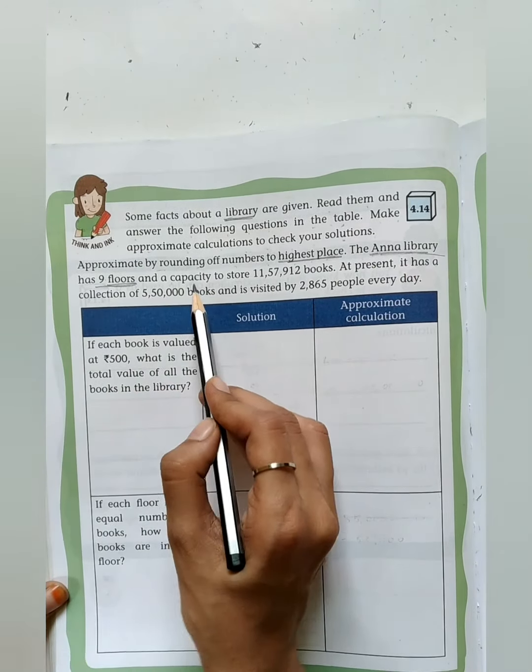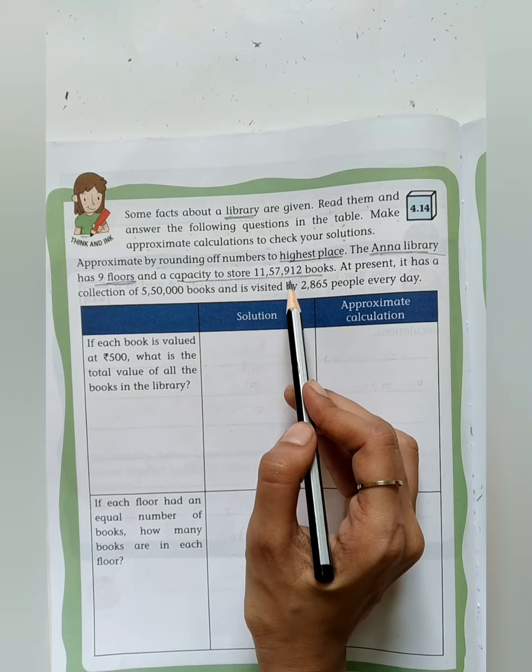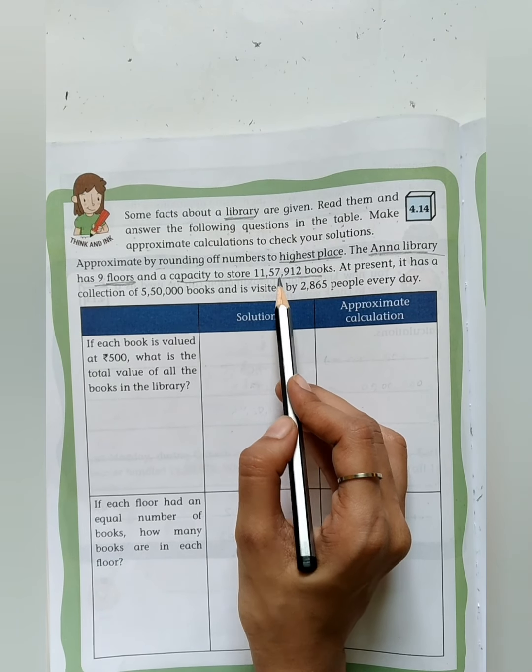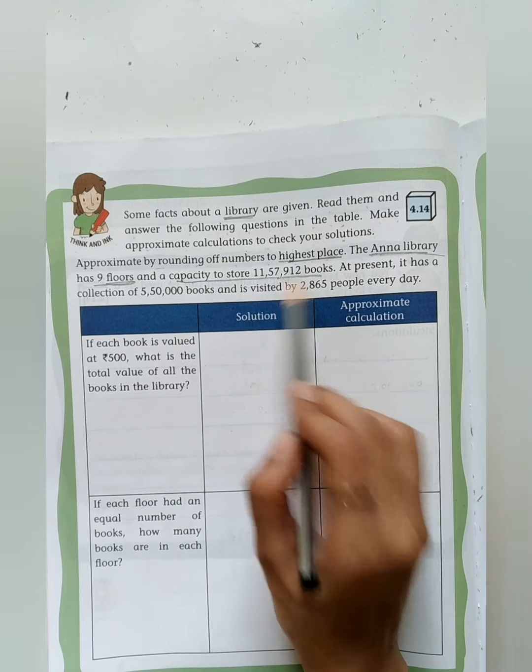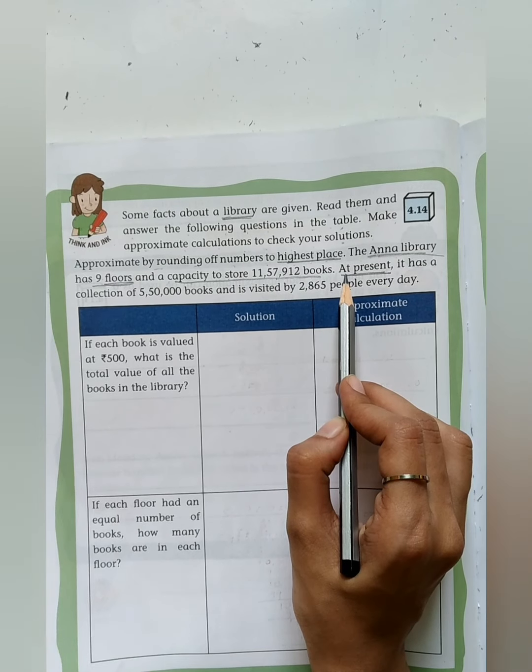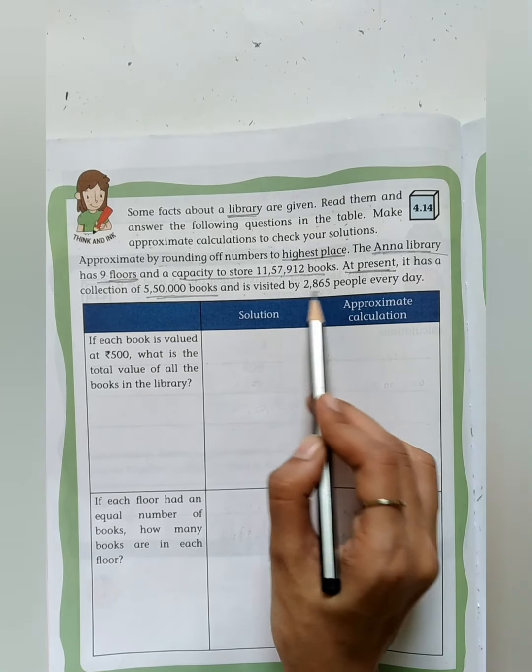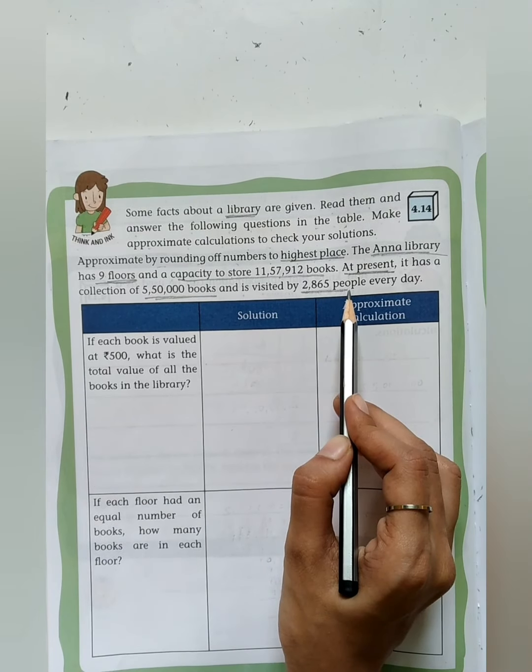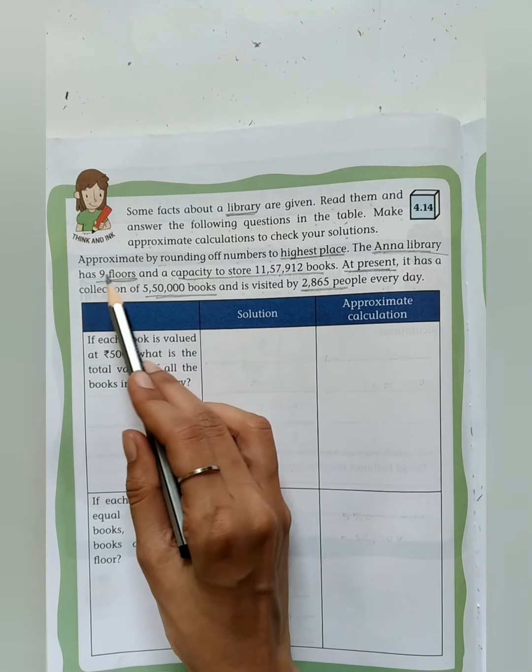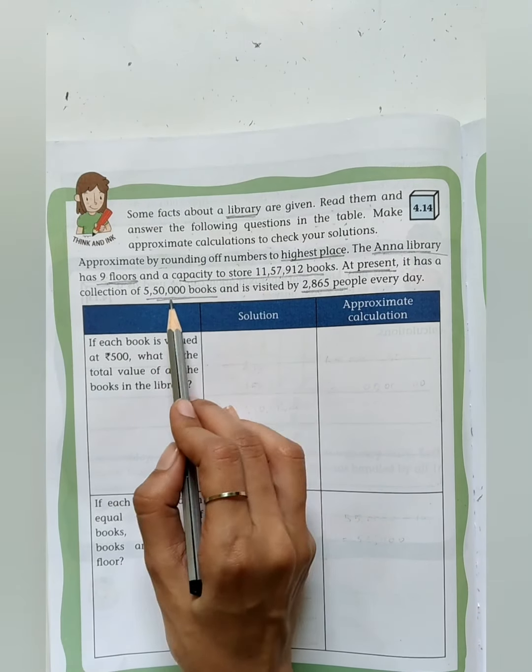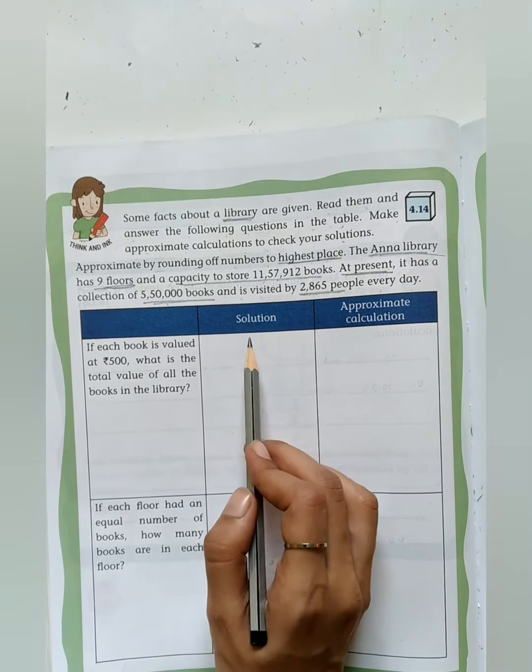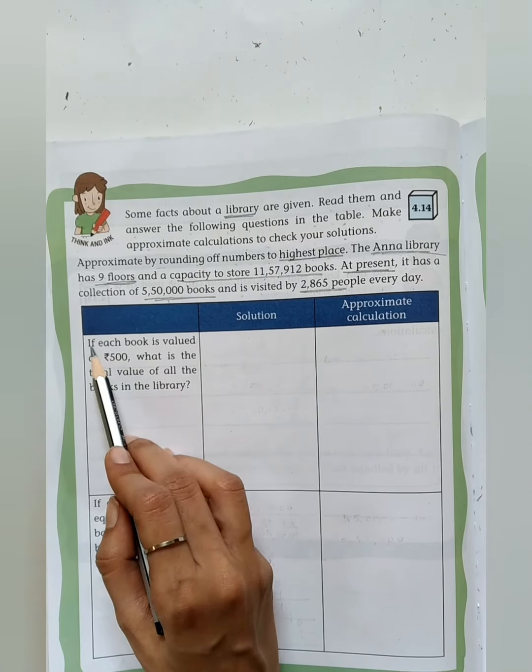Some facts about a library are given. Read them and answer the following questions in the table. Make approximate calculations to check your solutions. We are going to answer the following question and also find out the approximation by rounding off numbers to the highest place. The Anna library has 9 floors and capacity to store 11,57,912 books. At present, it has a collection of 5,50,000 books and is visited by 2,865 people every day. You have to remember the numbers because we are going to do the calculation within that.